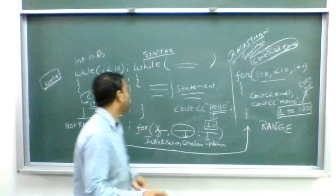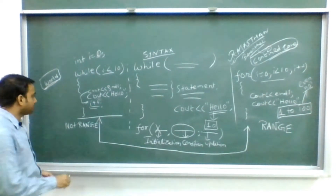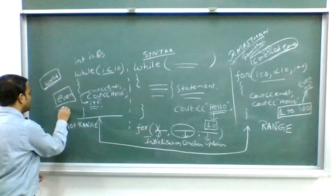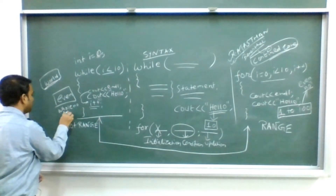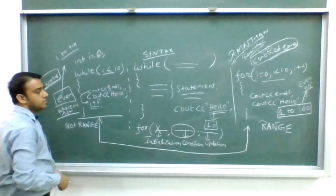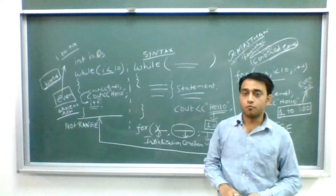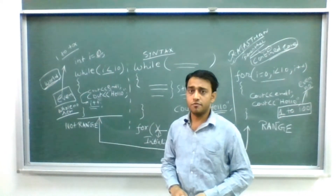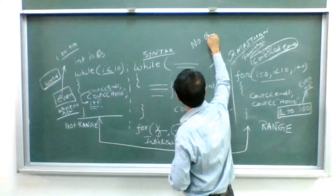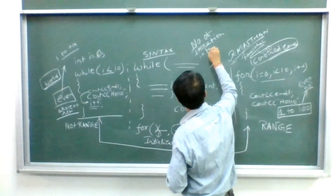But if I ask you to find all even numbers in the whole number set — the whole number set goes from 1 to up to infinity — then you don't have a particular range or confined zone. That means when we know the number of iterations in advance or in prior, we can define a range.